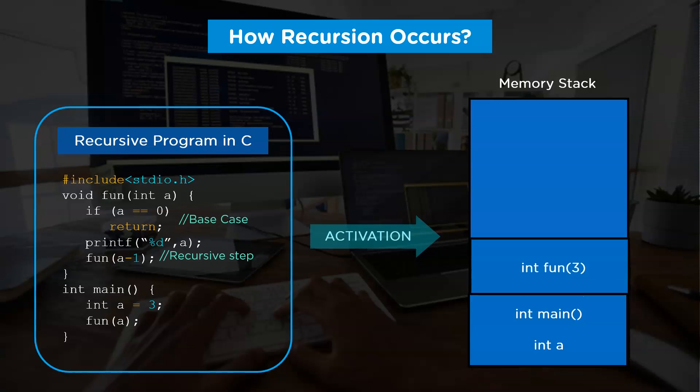Once activated, it will prompt three on screen and will invoke fun three minus one, that is fun two. Now again, as two is greater than zero, the control will invoke fun two minus one, that is fun one. After this, the control will activate fun zero.